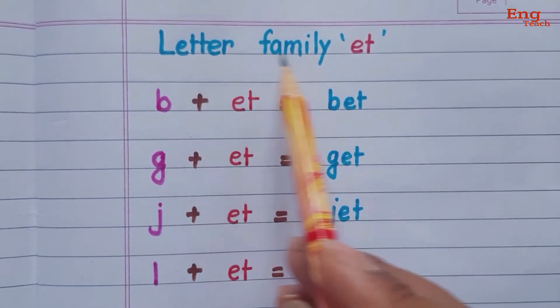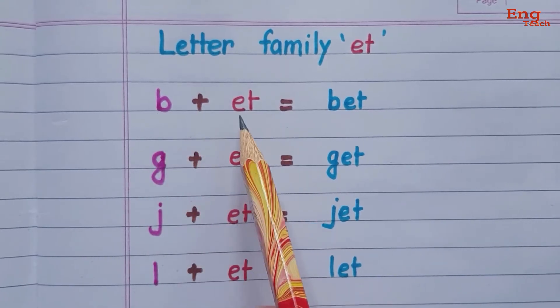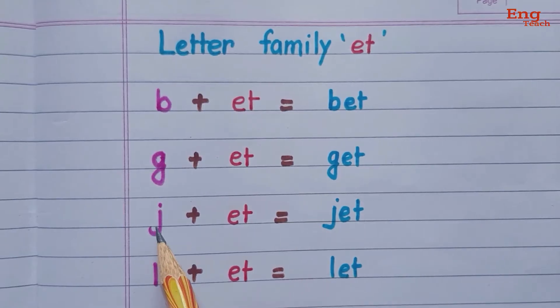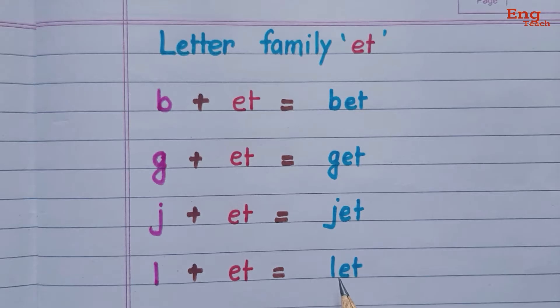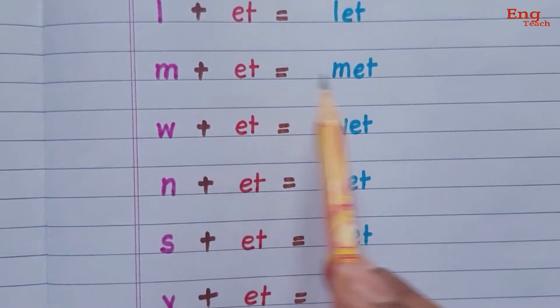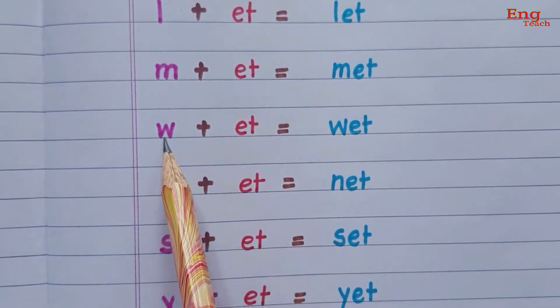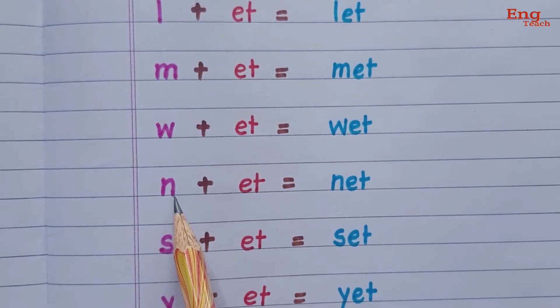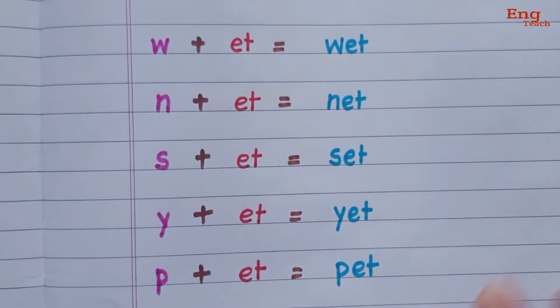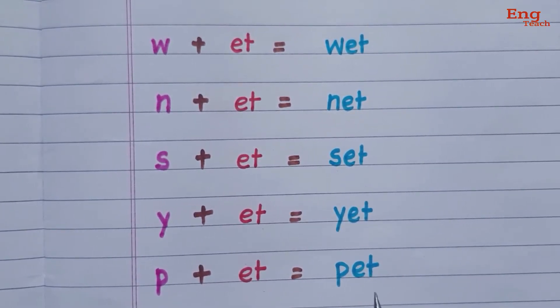Now, letter family 'et': B plus et equals bet, G plus et equals get, Z plus et equals zet, L plus et equals let, M plus et equals met, W plus et equals wet, N plus et equals net, S plus et equals set, Y plus et equals yet, P plus et equals pet. This way, your children can read CVC words.